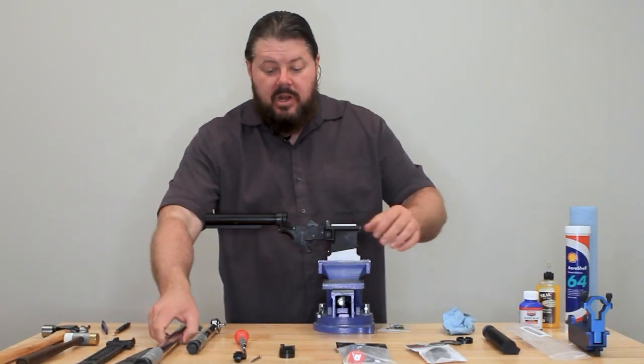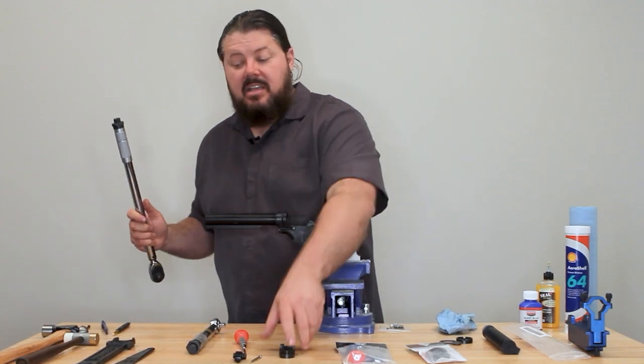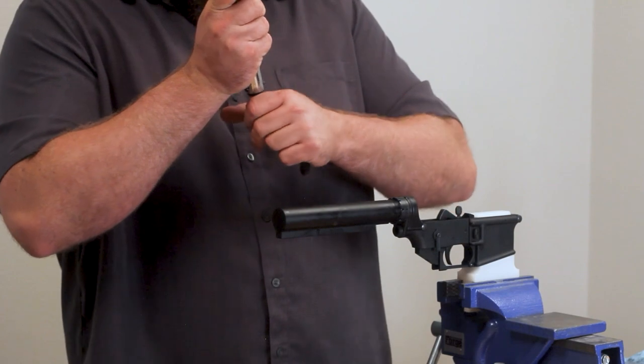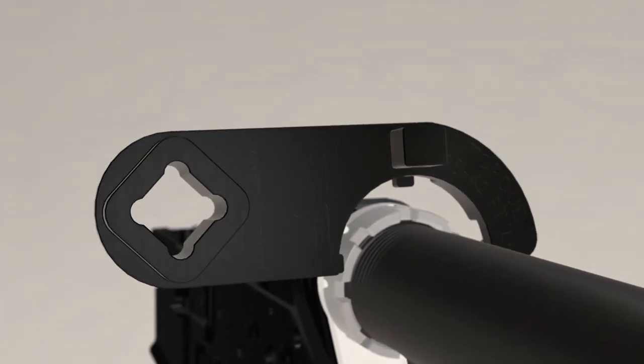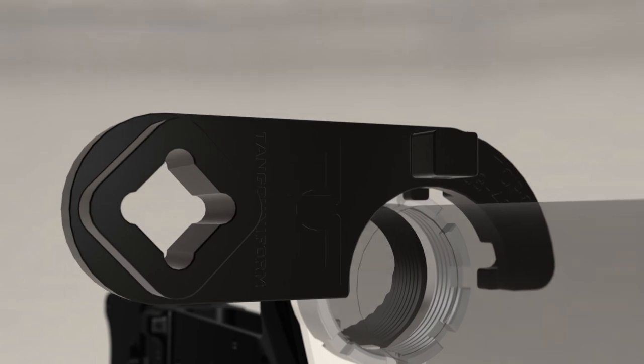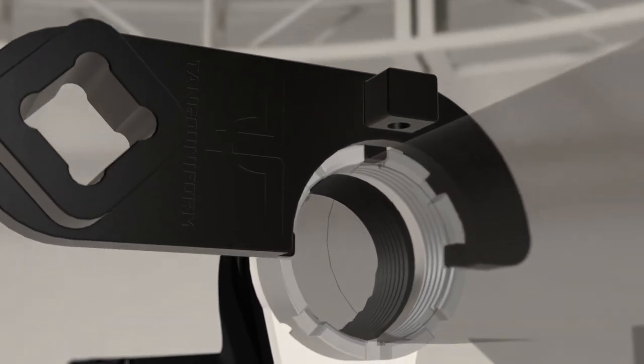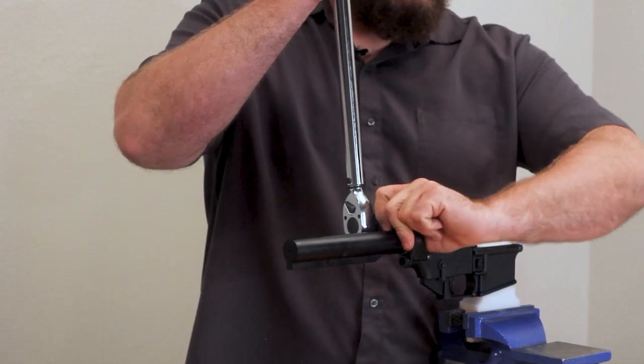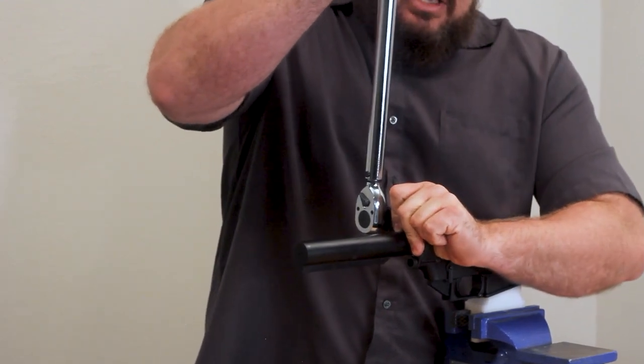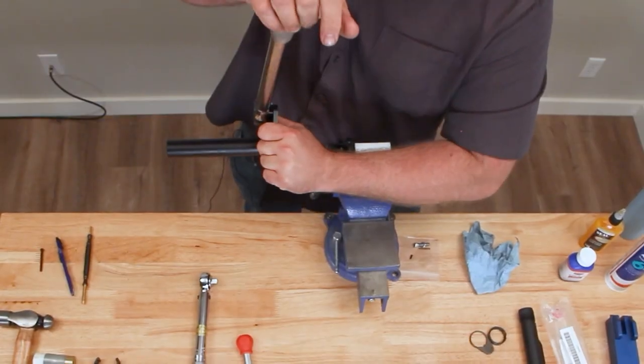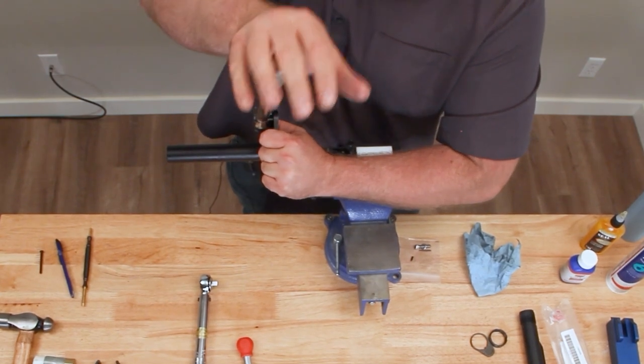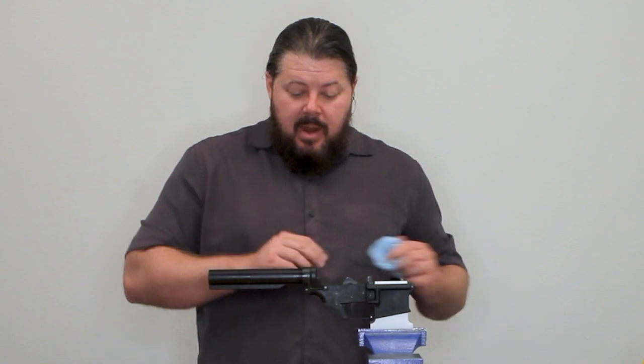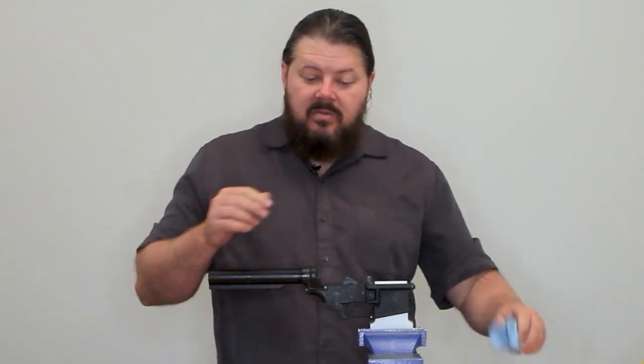Next, we're going to go ahead and torque the castle nut down. I like to put the flat side of the wrench towards the receiver. Slide it on there. Make sure that all three teeth are engaged. I like to use my non-dominant hand to pinch this together to make sure it stays in place. There you go. So now that guy's properly torqued on there, and we can move on to staking.